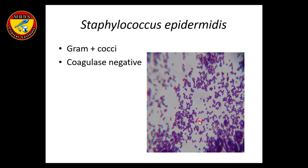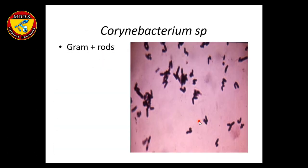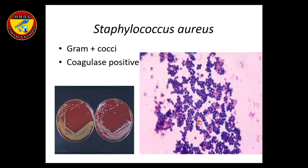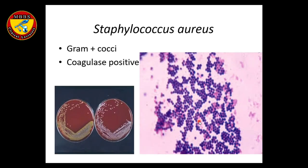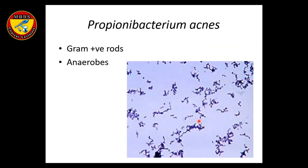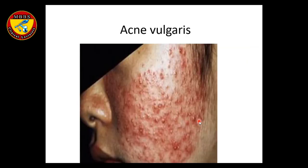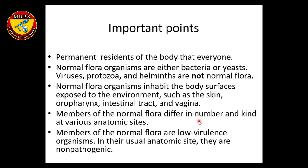Examples of normal flora include Staphylococcus epidermidis and Propionibacterium acnes, which is the cause of acne vulgaris, and Candida, which causes skin infections. Staphylococcus aureus is not considered normal flora — it may reside as a colonizer, especially in the nose, but it is basically a pathogen. Staphylococcus epidermidis is a normal flora.